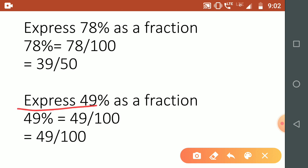Here is the second question. Express 49% as fraction. So 49 upon 100. This does not have any common factor, so it is the lowest term itself. We cannot reduce it. So this will be the answer for this question.